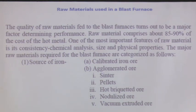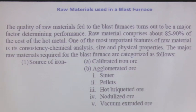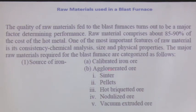In a flocculation process the purpose is to enlarge the size for separation by screening or settling. But here the material will be charged from 100 feet height — when reaching the bottom it should have sufficient strength, otherwise the purpose of agglomeration is defeated. Flocculates do not have sufficient strength. So the agglomeration processes are: sintering, pelletizing, hot briquetting, nodulizing, vacuum extruded ore, and others. Of these, sintering and pelletizing are the two most popular.